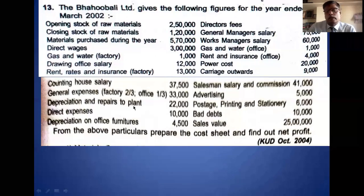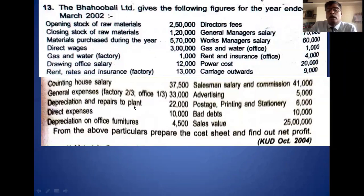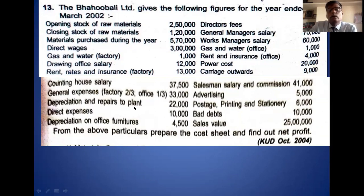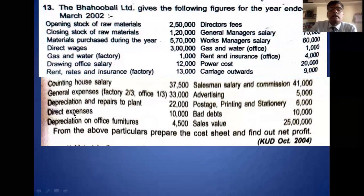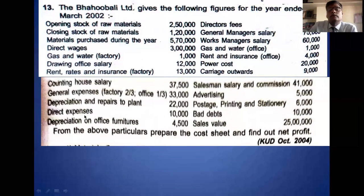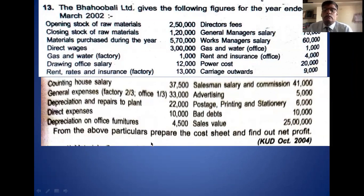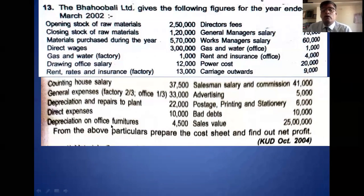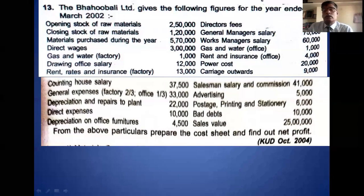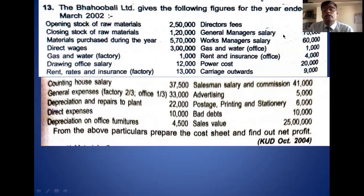Depreciation on plant — plant is always used in the factory, therefore this is a factory overhead. Direct expense is part of prime cost, so you take it in the first head. Depreciation on office furniture — furniture is specifically related to office and administration, therefore it goes to office and administration expense.